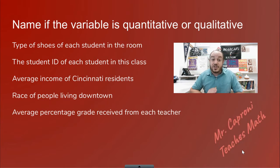Type of shoe of each student in the room. We're not measuring anything, so this one's going to be qualitative. The student ID of each student in this class. Now that can be extremely confusing because student IDs are usually numbers, but are they numbers that are measuring anything? No. So this is actually a trick one. A student ID, even though it's a number, is actually just a label for a person that the school places on them, so this is also qualitative.